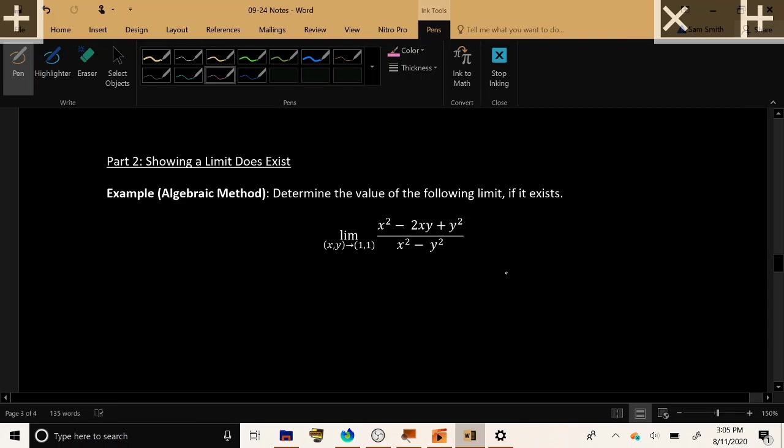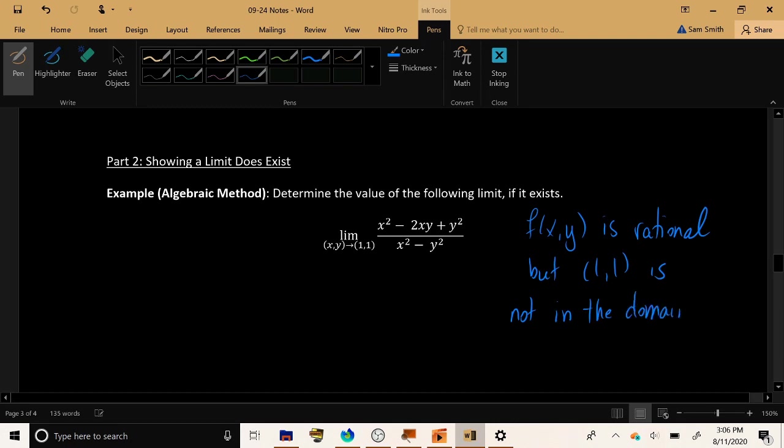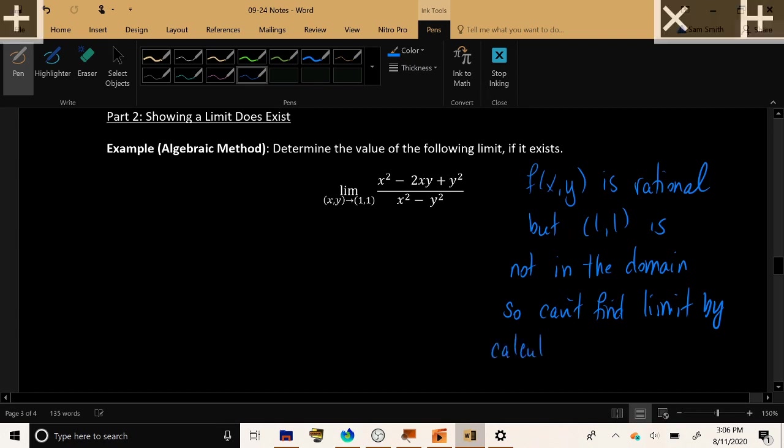And we have the rational function, which is x squared minus 2xy plus y squared, all over x squared minus y squared. So let's first of all check, can I just, is this a rational function, polynomial, radical, that I can just plug the number into this function because of continuity, that will be the limit. Well, it is rational, but if I just plug in 1 comma 1 to this function, the result is undefined. So f of xy is rational, but 1 comma 1 here is not in the domain. So can't find limit by calculating the value that we just get by plugging in this point.